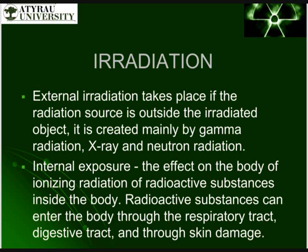The process of exposure to ionizing radiation on environmental objects of animate and inanimate nature is called irradiation. Depending on the location of the source of radioactive radiation in relation to the object, external and internal exposure are distinguished. External irradiation occurs if the radiation source is outside the irradiated object.